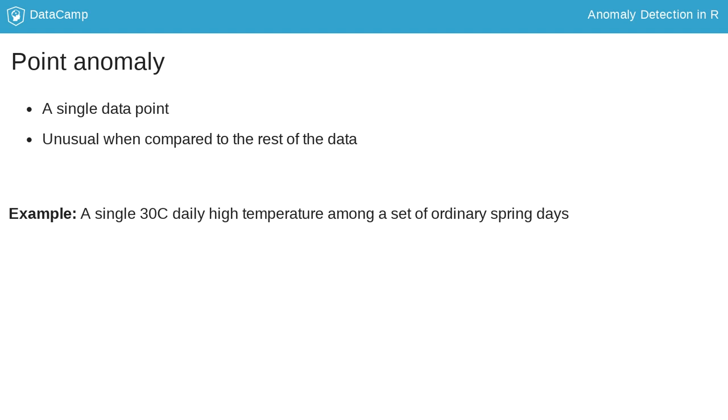For example, observing a single unseasonably hot spring day could be considered anomalous. The hot spring day is anomalous because the temperature is extreme compared to all of the others. Point anomalies often occur in this way as a singular extreme value on a single attribute of the data point.